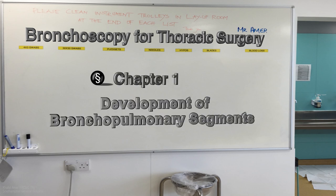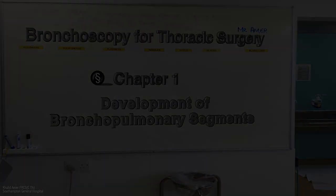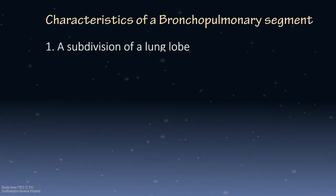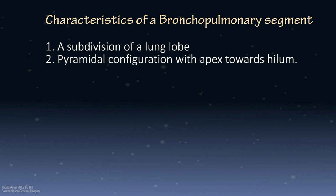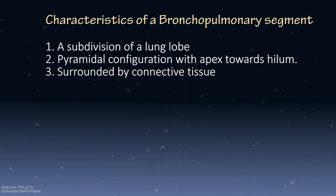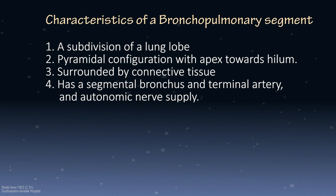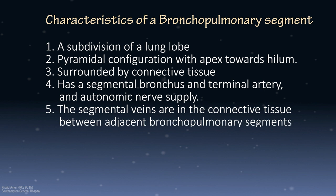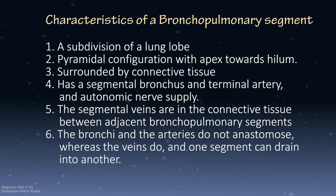A bronchopulmonary segment is a subdivision of a lung lobe. It is pyramidal in configuration with the apex towards the hilum, as evidenced by the radiology of an infarcted segment. It is surrounded by connective tissue and has a segmental bronchus, a terminal artery, and autonomic nervous supply. The segmental veins are in the intersegmental connective tissue between adjacent segments. The bronchi and arteries do not anastomose whereas the veins do. If one vein is cut, the segment will find alternative drainage; if the artery is cut, infarction of the segment ensues.